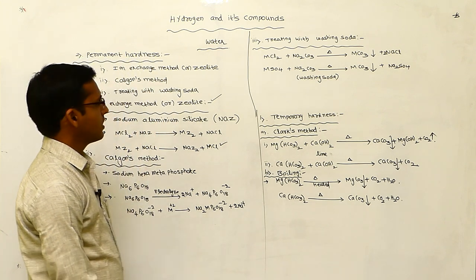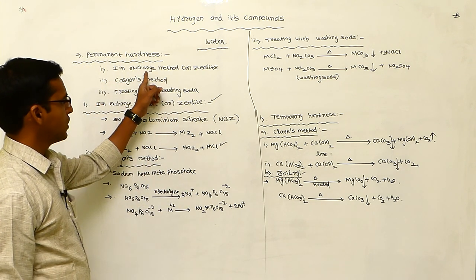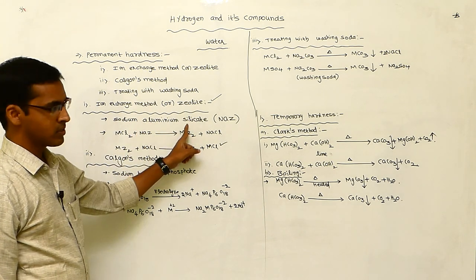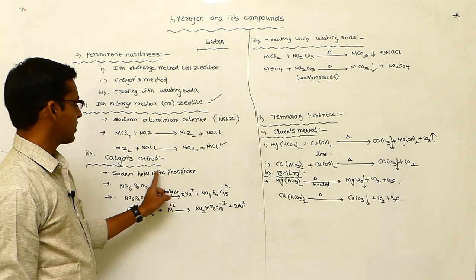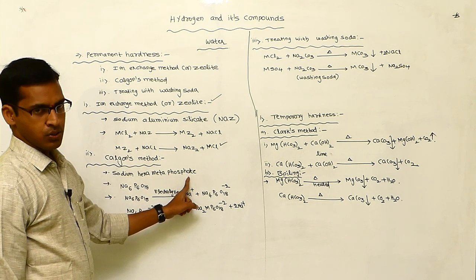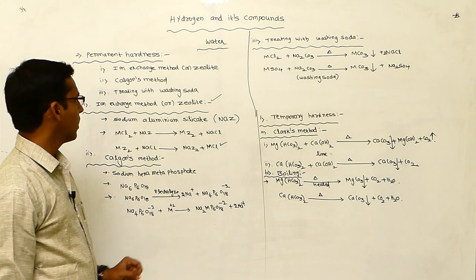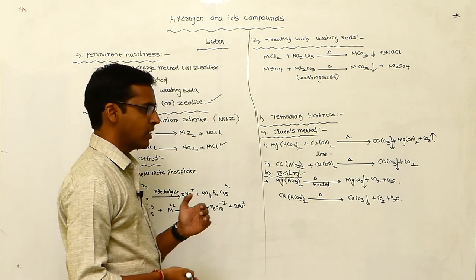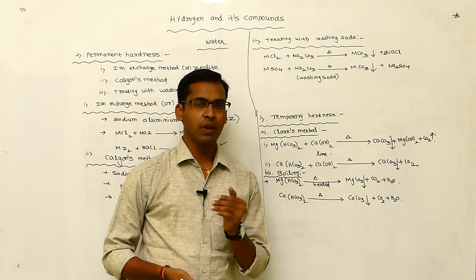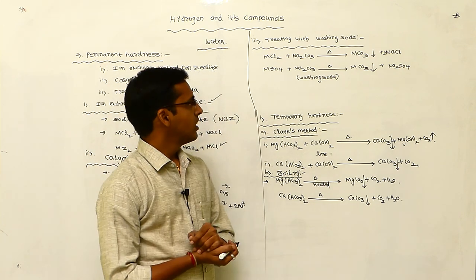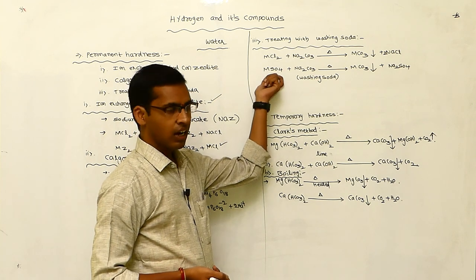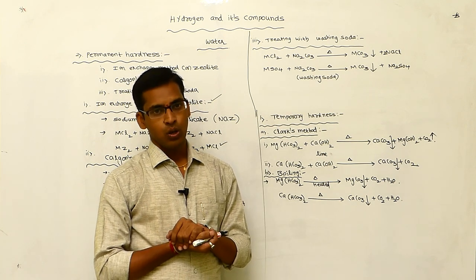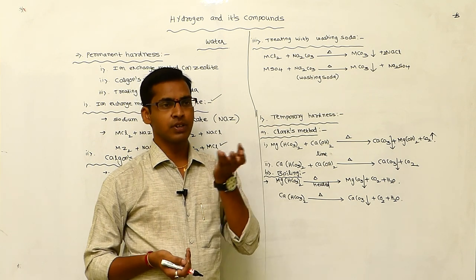The permanent hardness of water can be removed by the ion exchange method using zeolite, which is sodium aluminum silicate; by the Calgon method using sodium hexametaphosphate; and by treating with washing soda. The permanent hardness contains metals like calcium or magnesium with chlorides or sulfates. These are treated with washing soda to liberate insoluble salts, which then precipitate out.